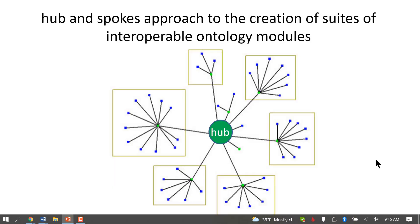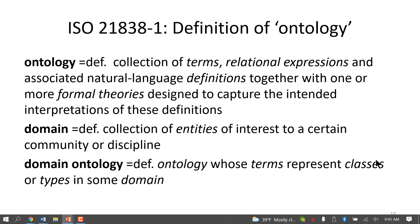This standard is designed to resolve that problem. The definition of ontology in ISO 21838 Part 1 is designed to be neutral as between two groups of ontologies: the W3C-type ontologies built using OWL, and the large number of biomedical ontologies which were initially not built using OWL. They've been re-engineered to be OWL conformant, but their approach was quite different. The standard is intended to be neutral between these two approaches.